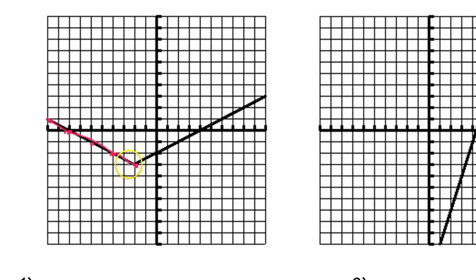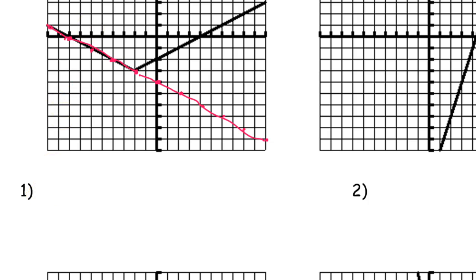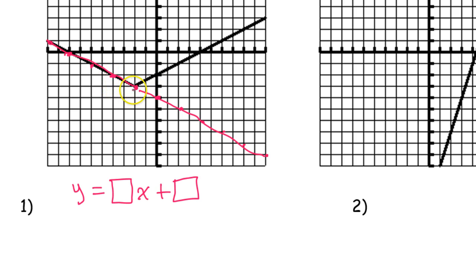It seems to be going down 1 over 2. So down 1 over 2. If this were an entire line, it would continue like this. What is the equation of that line? Because that's going to give me the first part of my piecewise function. This would be y equals — thinking about good old y equals mx plus b. The slope is down 1 over 2, which is negative 1 half.